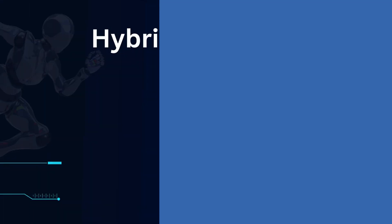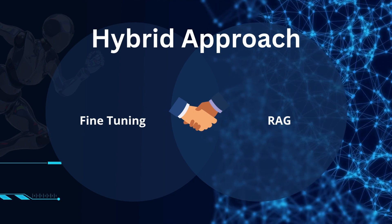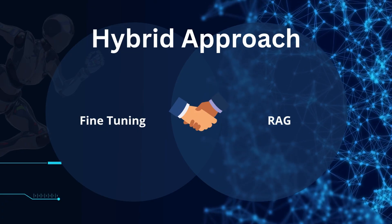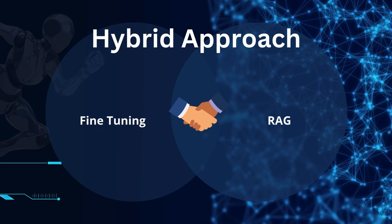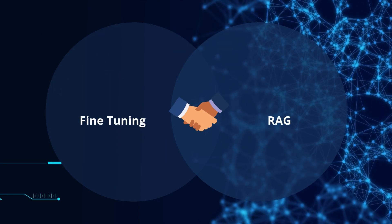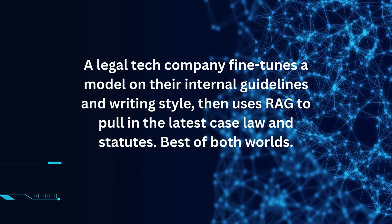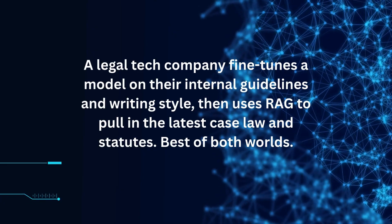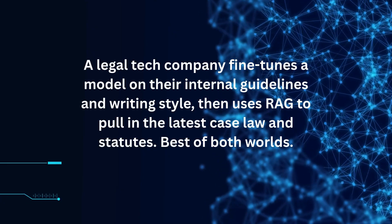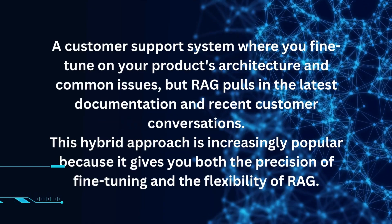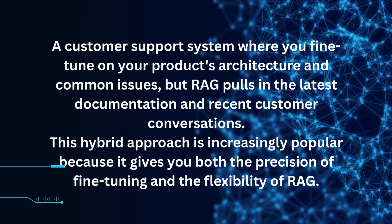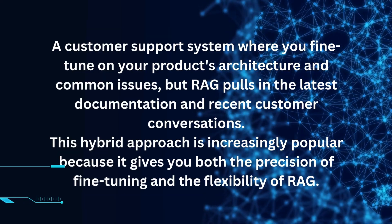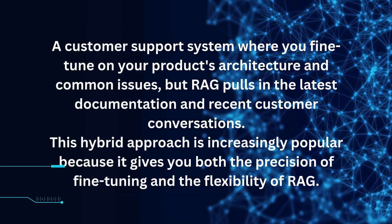Here's a pro tip most people don't think about: you can combine them. Fine-tune a model on your core domain knowledge, your style, your tone — then add RAG on top for dynamic, frequently changing information. For example, a legal tech company fine-tunes a model on their internal guidelines and writing style, then uses RAG to pull in the latest case law and statutes — best of both worlds. Another example: a customer support system where you fine-tune on your product's architecture and common issues, but RAG pulls in the latest documentation and recent customer conversations. This hybrid approach is increasingly popular because it gives you both the precision of fine-tuning and the flexibility of RAG.